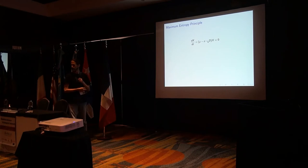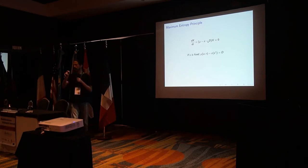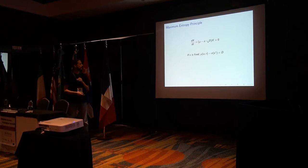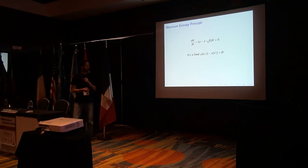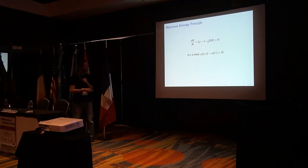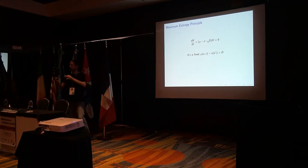And then we are going to make a subtle assumption: if we are already in this stationary state, we can say that dx/dt is zero, and therefore that mu is equal to sigma minus D. What is interesting here is that the only parameter that experimentalists can tune is actually D. That's something they can change. While mu is something that appears — it's the growth rate of the system that would depend on the equation.